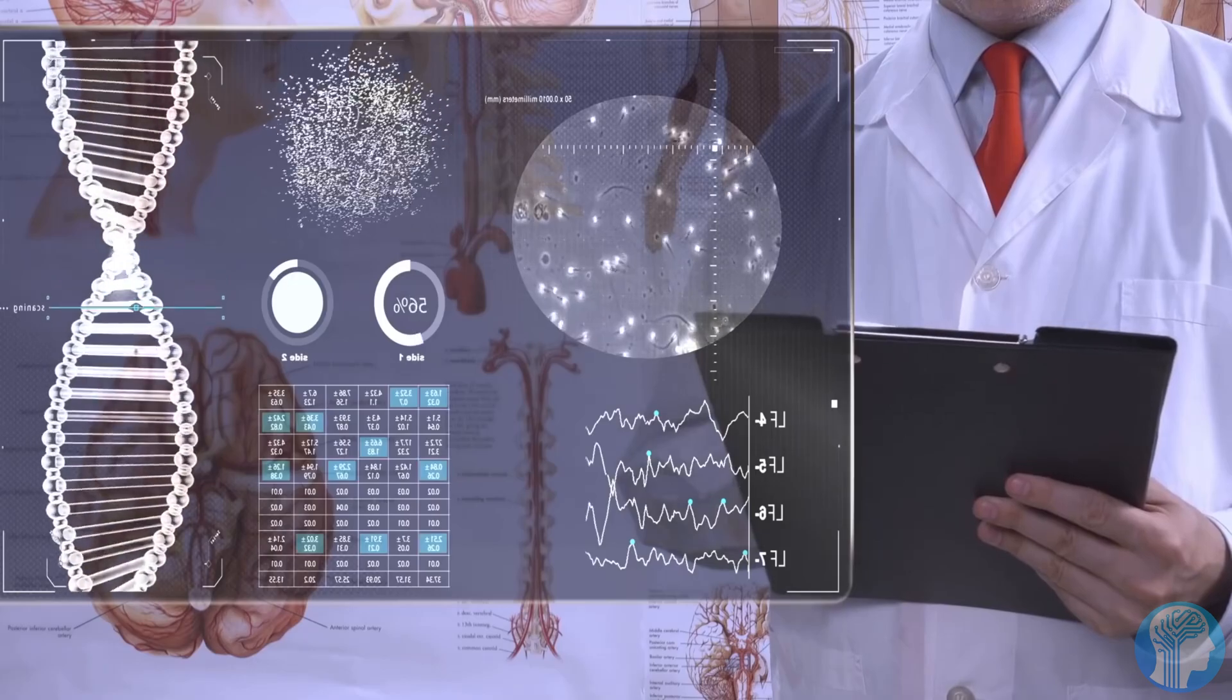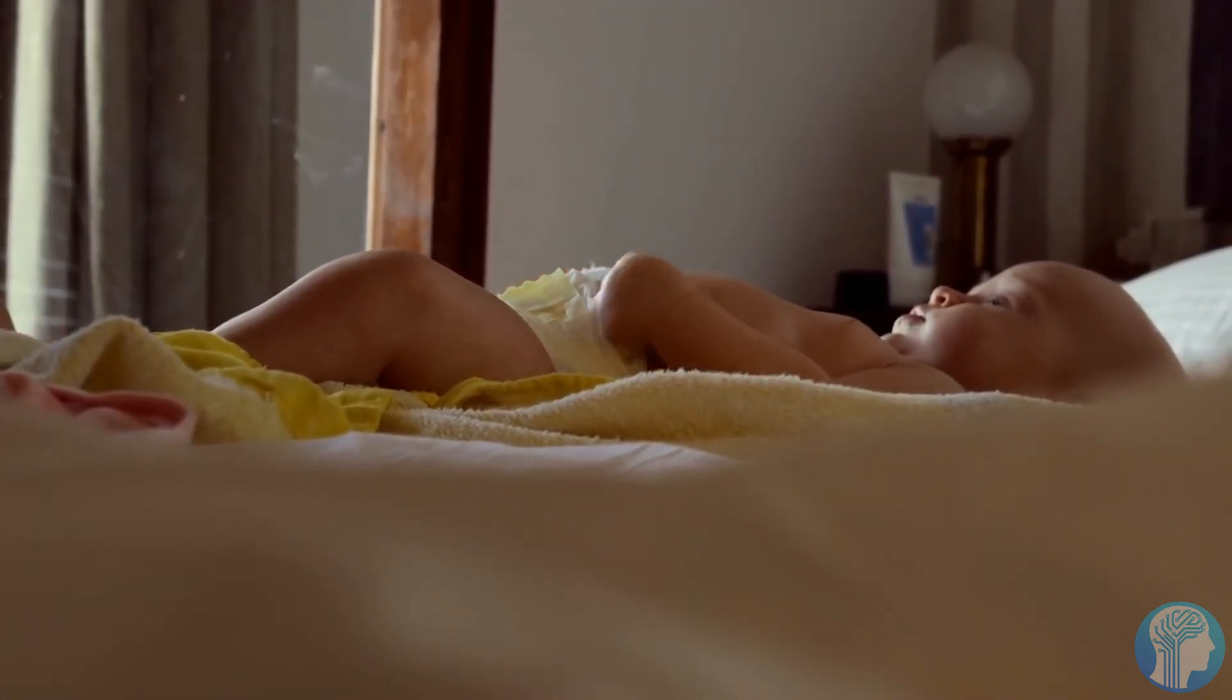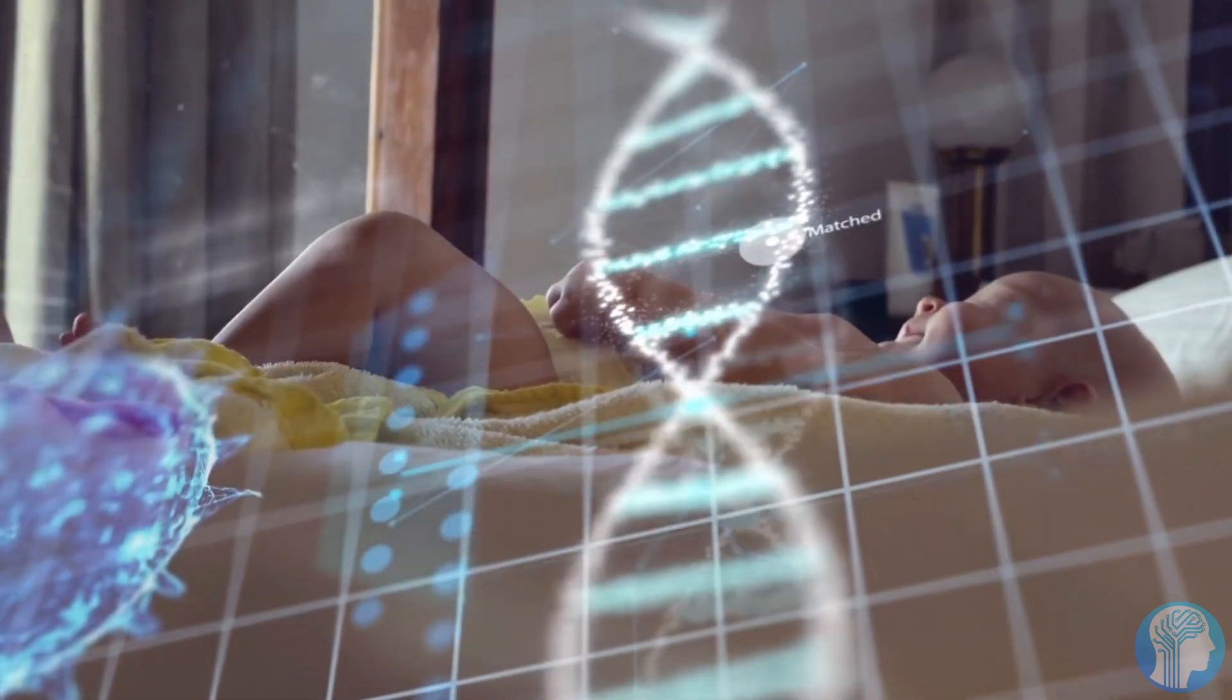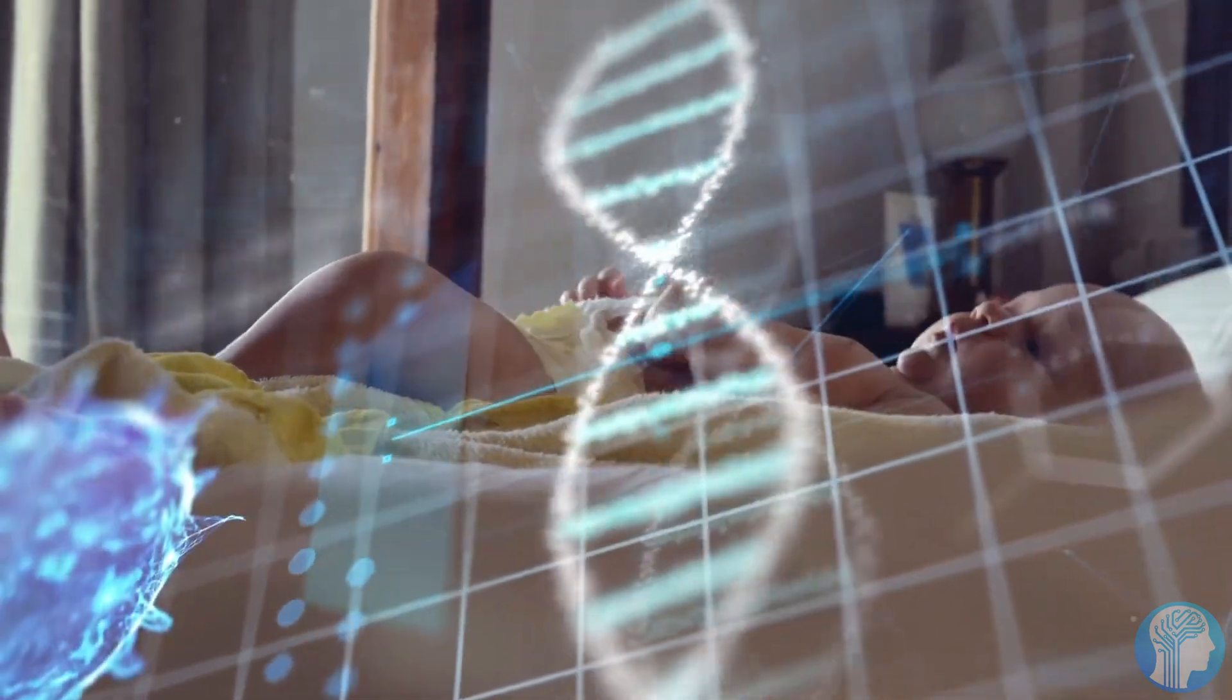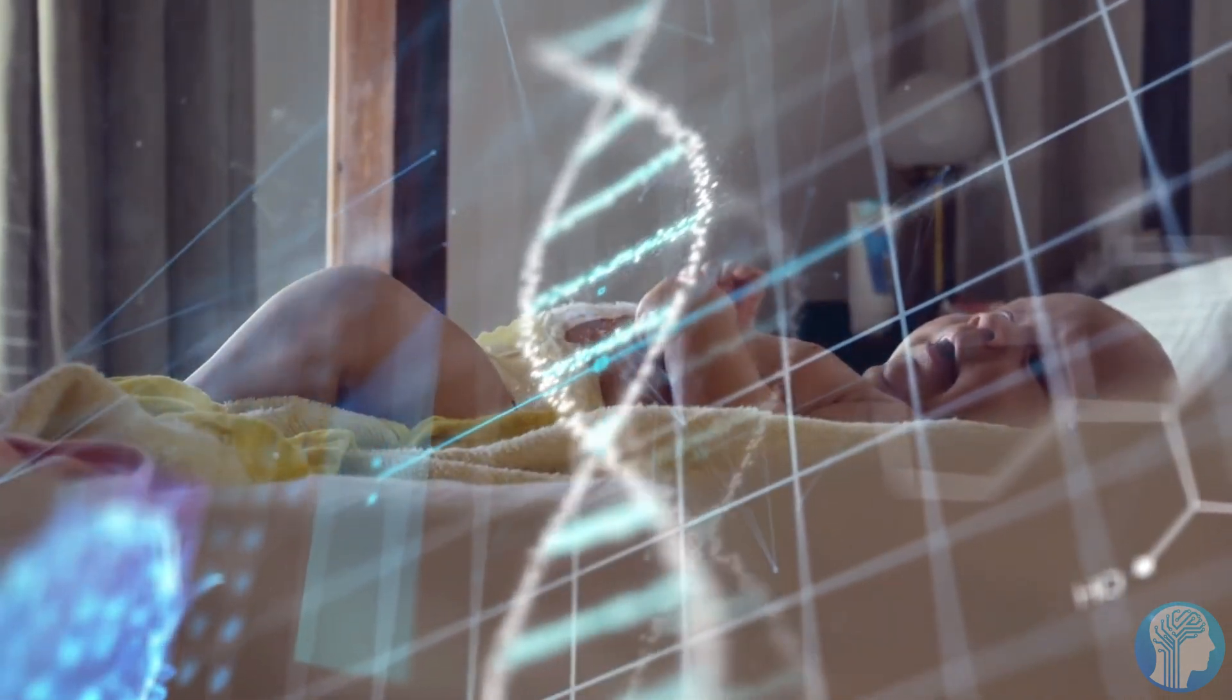These bots appear to be alive, therefore it's worth considering how we define life. Life, according to NASA, is a self-sustaining chemical system capable of Darwinian evolution, albeit this definition may be disputed by certain experts.